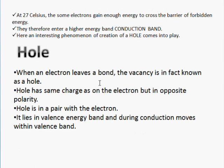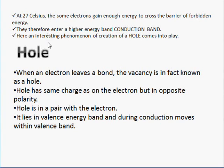At 20 degrees Celsius, some electrons gain enough energy to cross the forbidden energy gap — this is for semiconductors. They therefore enter a higher band called the conduction band. Now there comes another interesting phenomenon: the hole. Let me introduce the hole to you. Simply put, whenever an electron gains enough energy it leaves the bond and goes to the conduction band, and the vacancy it leaves behind — the absence it leaves behind — is known as a hole.